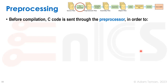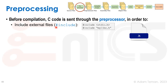Starting with preprocessing: before compilation, C code is sent through the preprocessor, which takes the files we wrote and replaces some text with other things to be passed to the compiler. These are called preprocessor directives and start with a pound sign. For example, #include pulls in external files — libraries provided as header files. Files we wrote ourselves are put in quotation marks; standard library files use angle brackets.